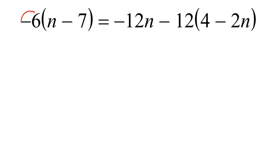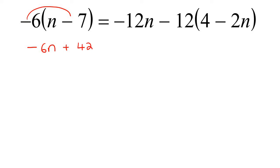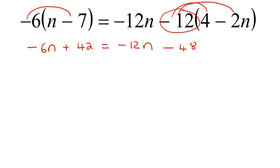The way that we do that is by multiplying this minus 6 into the bracket. So that's going to become minus 6n, and then minus 6 times minus 7 becomes positive — look out for that — 42. And then over here, we have minus 12n. This negative 12 is now going to be multiplied into that bracket, so that's going to become minus 48, and then plus — because a negative multiplied with a negative is a positive — so it's going to become plus 24n.